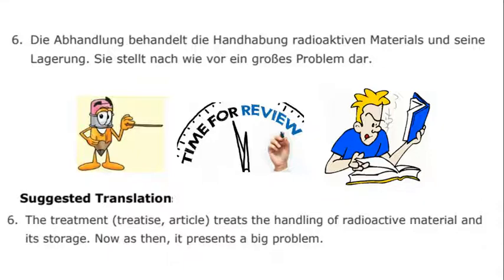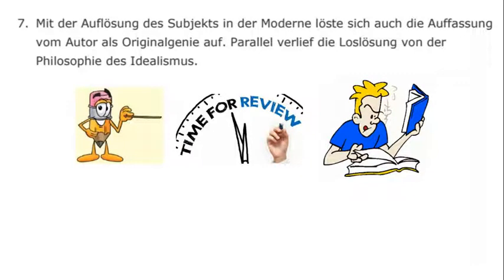We have here the sense that die Abhandlung and behandelt have a relation — one seems to be a verb and the other a noun derived from the verb through predictable rules. We also have Handhabung as another variation. Additionally there is the interesting construction with stellt and the ending dar separated by many words — Sie stellt nach wie vor ein großes Problem dar. Why is dar all the way on the other side of stellt? Because darstellen is a separable prefix verb, as we learned about earlier.